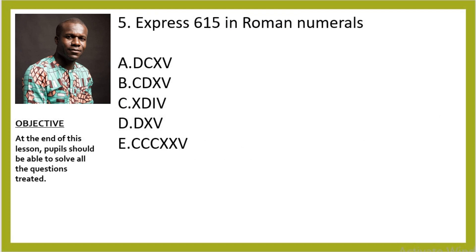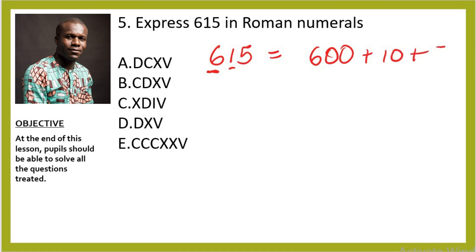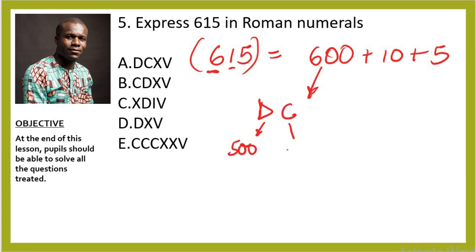Question 5: Express 615 in Roman numerals. First, expand: 600 + 10 + 5. In Roman numerals, D is 500, DC is 600, C is 100, X is 10, and V is 5. So DC = 600, X = 10, V = 5. Our answer is DCXV. Looking at the options, the right option is E.